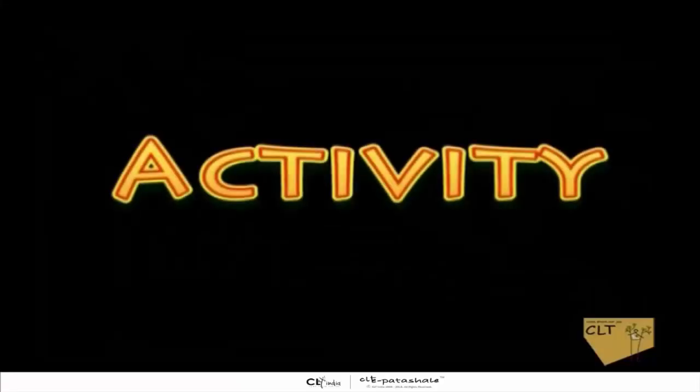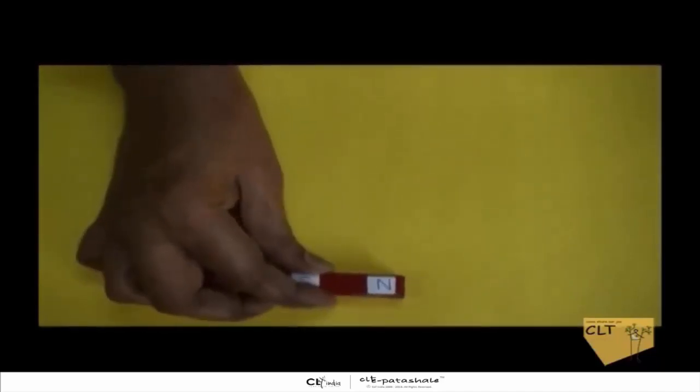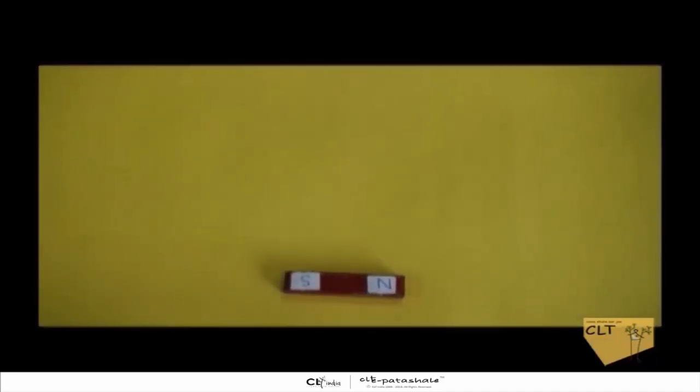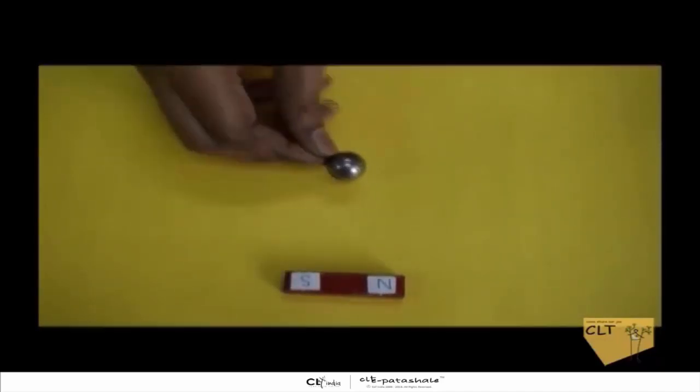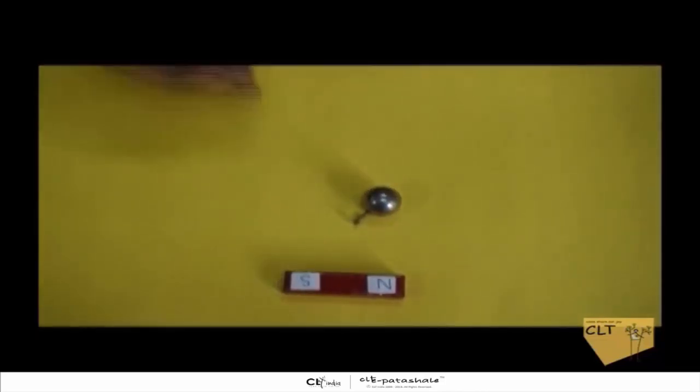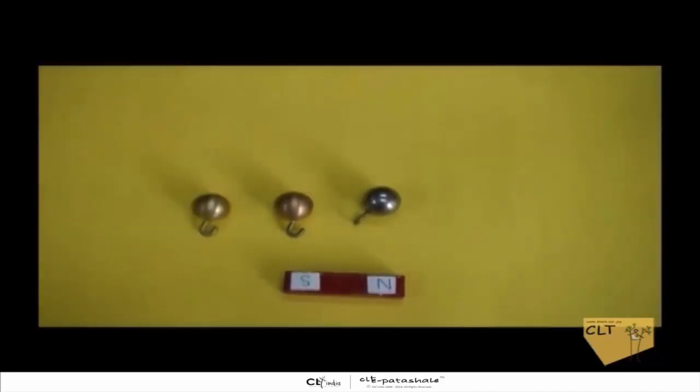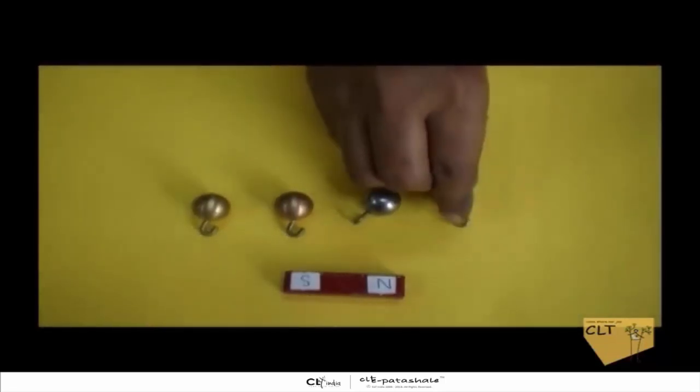We shall study the properties of magnets through some activities. For our first activity you will need the following materials: a magnet, small pieces of metals like iron, copper, brass, and aluminium.